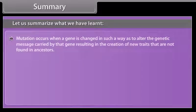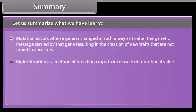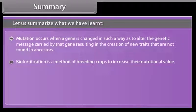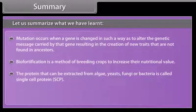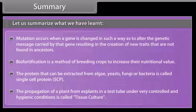Mutation occurs when a gene is changed in such a way as to alter the genetic message carried by that gene, resulting in the creation of new traits not found in ancestors. Biofortification is a method of breeding crops to increase their nutritional value. The protein that can be extracted from algae, yeasts, fungi, or bacteria is called single cell protein (SCP). The propagation of a plant from explants in a test tube under very controlled and hygienic conditions is called tissue culture.